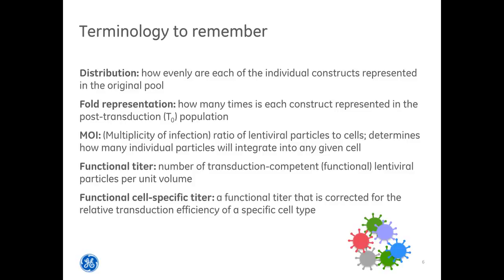MOI, or multiplicity of infection, is the ratio of lentiviral particles to cells. An MOI of 10 means that on average each cell will be transduced with 10 lentiviral particles and have 10 integration events. A functional titer is the number of lentiviral particles per volume able to transduce cells, and a functional cell-specific titer is corrected for the relative transduction efficiency for your cells of interest.